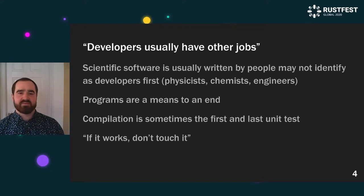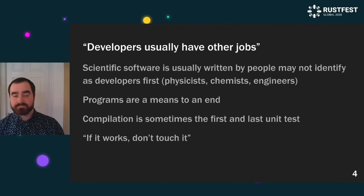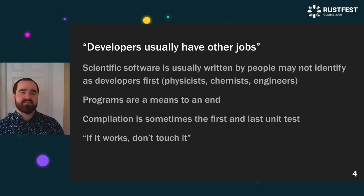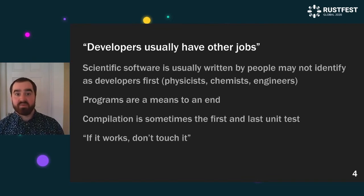The final thing with scientific software is that the developers usually have other jobs, and writing software might just be part of someone's job — they don't actually consider themselves to be expert software engineers. These might be people who are primarily physicists, chemists, biologists, or engineers. For a lot of people, programs are just a means to an end, and sometimes good software engineering practices are thrown out the window. Sometimes compilation or interpretation is the first and last unit test a program gets, and there's this idea that if it works, don't touch it — which I think is a negative idea.